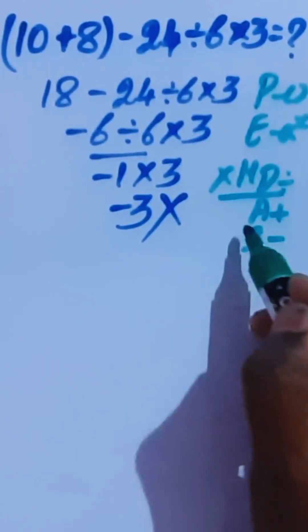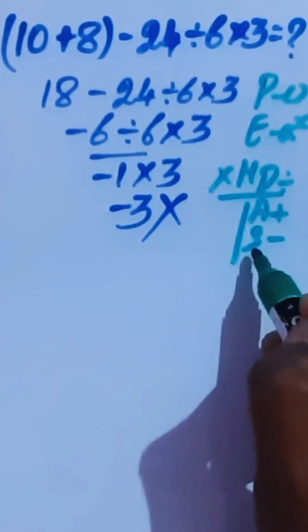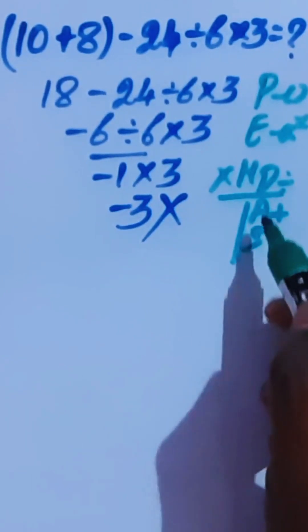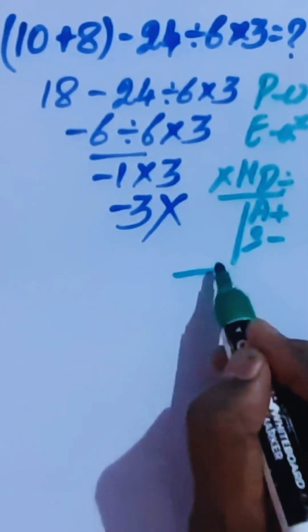Here multiplication and division are equal priority. Also addition and subtraction are equal priority. For this we are going to introduce another rule called left to right.